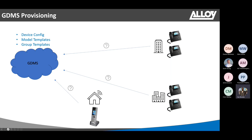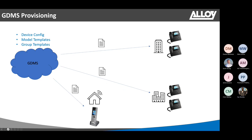One of the biggest advantages of using GDMS is its mass provisioning feature. This will save so much time and manpower when it comes to configuring and deploying Grandstream devices. You don't have to unpack all the devices and configure them one by one before sending them to customers. You can simply add all the devices to GDMS and create configuration templates for them. As soon as the device plugs into the network, by default it will send a request to GDMS to see if there are any configuration files available, and if there are any for those particular MAC addresses, GDMS will push out those settings to the handsets.